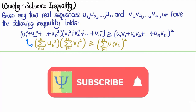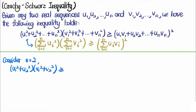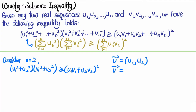Before proving the general case with n terms, let's consider the case when n = 2: (u₁² + u₂²)(v₁² + v₂²) ≥ (u₁v₁ + u₂v₂)². We can interpret this using two vectors: vector u with components u₁, u₂ and vector v with components v₁, v₂, both in a two-dimensional plane.